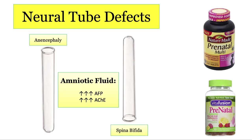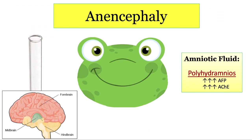Now let's meet the players: anencephaly and spina bifida. An open tube up top gives you anencephaly, while an open tube at the bottom gives you spina bifida. If you fail to close the neural tube up top, you'll get anencephaly, where your forebrain — that is, everything above the midbrain — fails to develop. In utero, you'll see increases in amniotic alpha-fetoprotein and acetylcholinesterase, as well as polyhydramnios, because the fetus cannot swallow amniotic fluid without a forebrain telling them to do so.